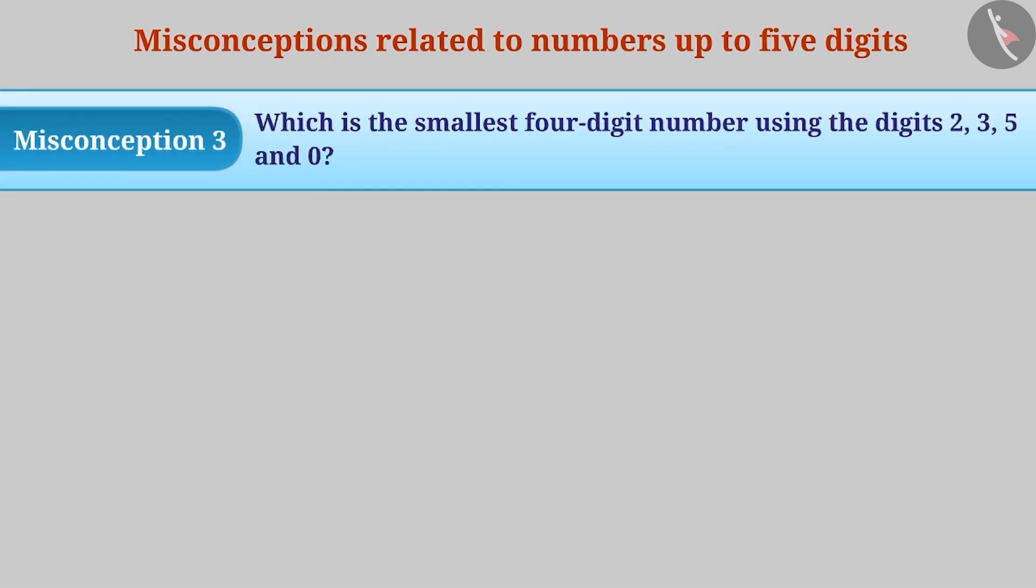Misconception 3: Which is the smallest 4-digit number using the digits 2, 3, 5 and 0?